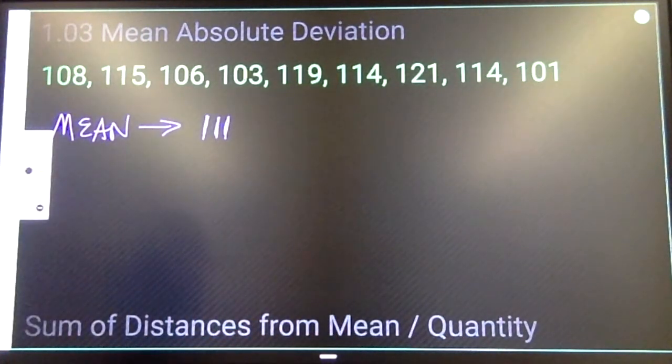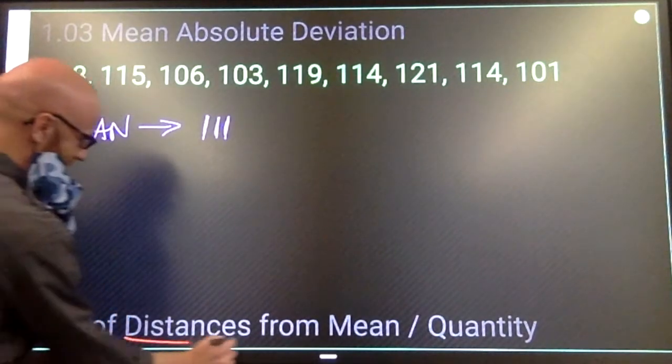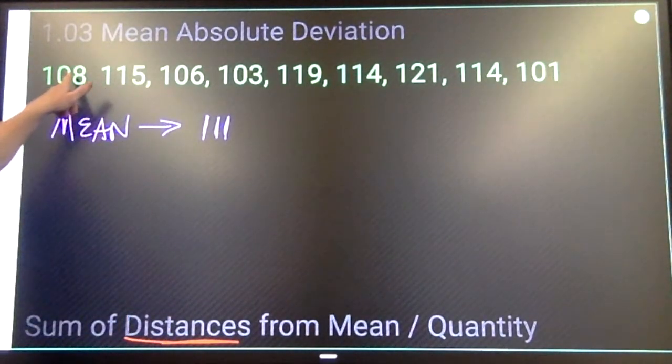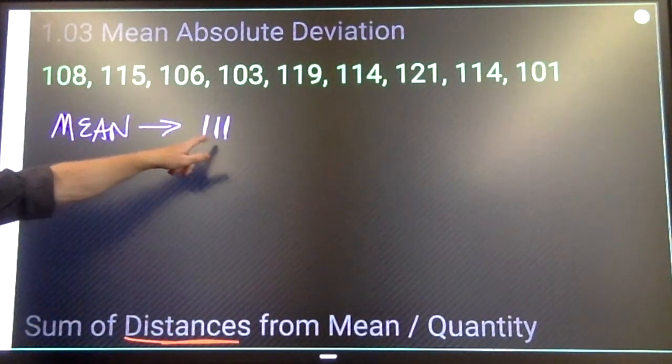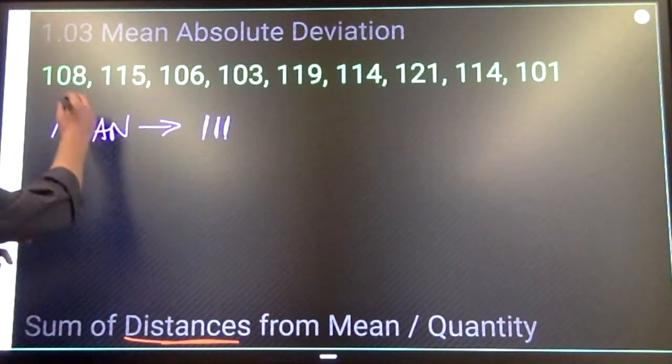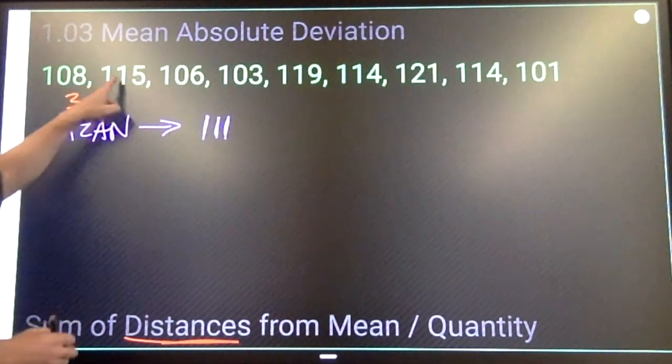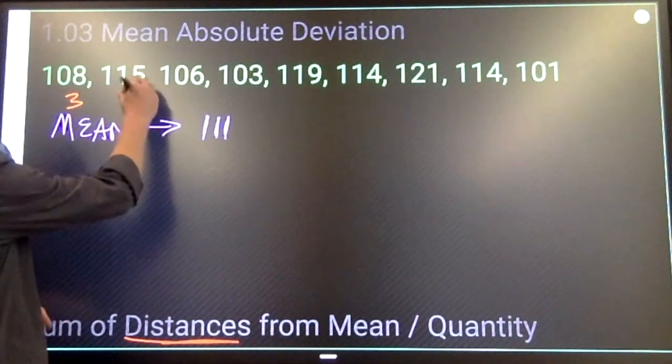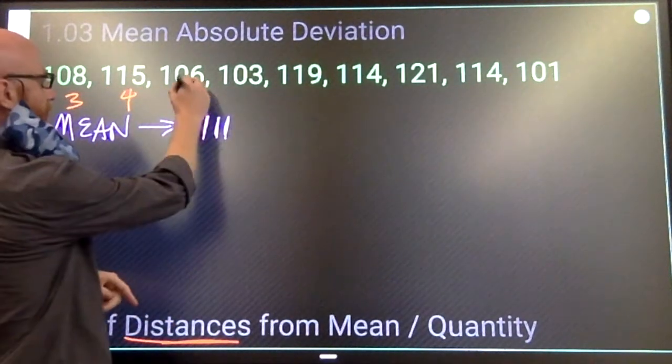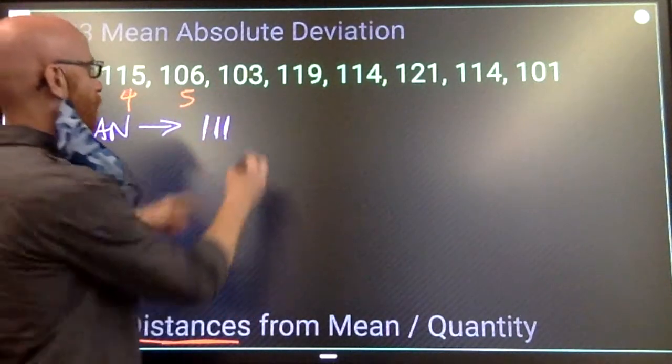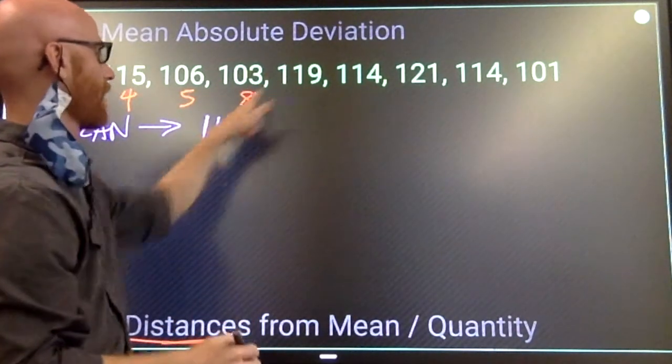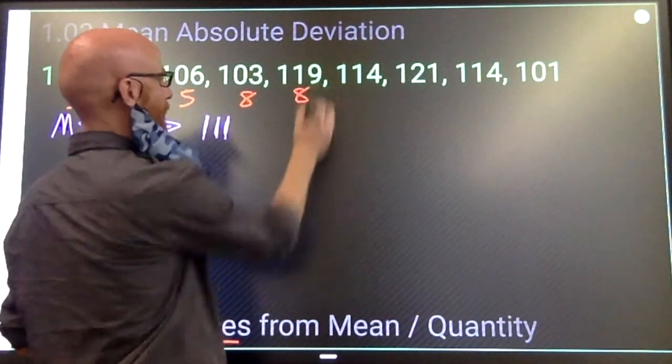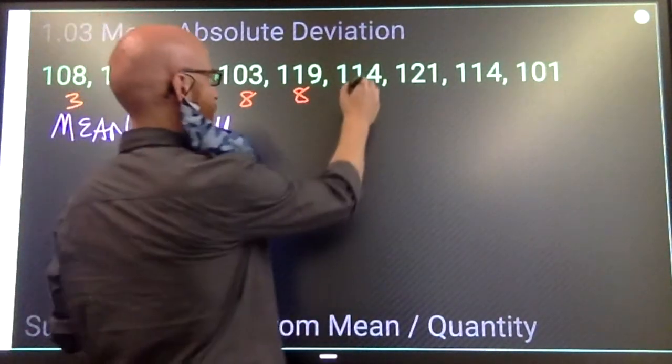We want to find the distances of each of these numbers from the mean. So distance from 108 to 111 is 3, the distance from 115 is 4, distance from 106 is 5, distance from 103 is 8, 119 minus 111 is also 8.